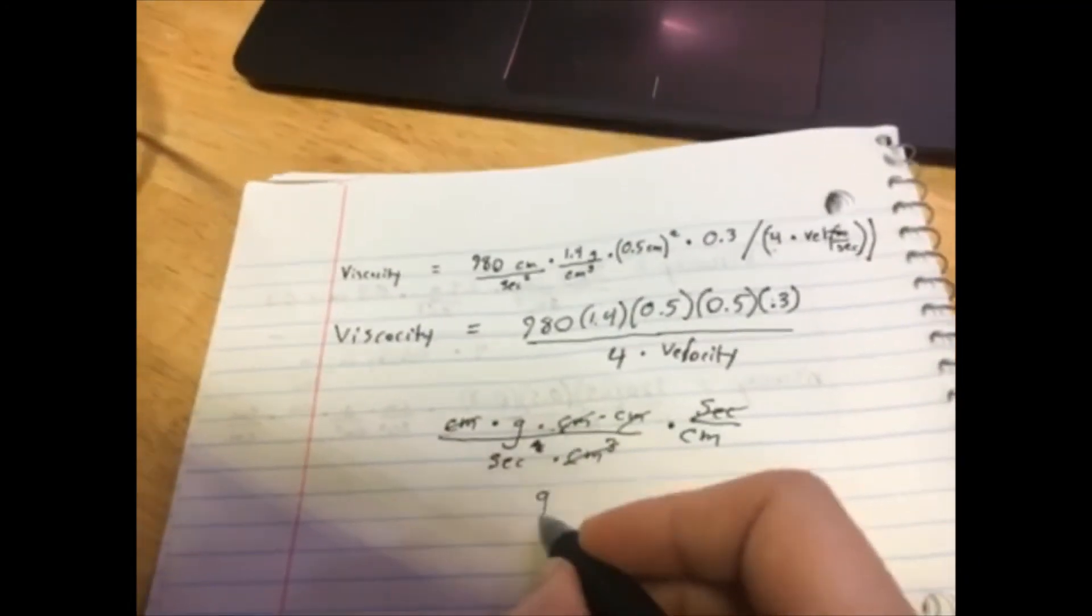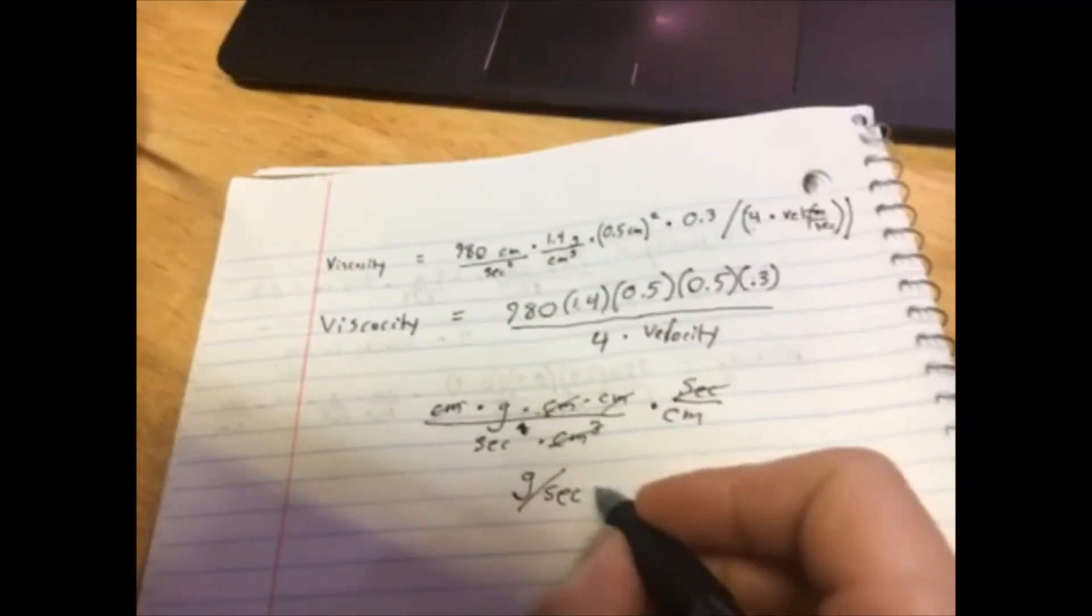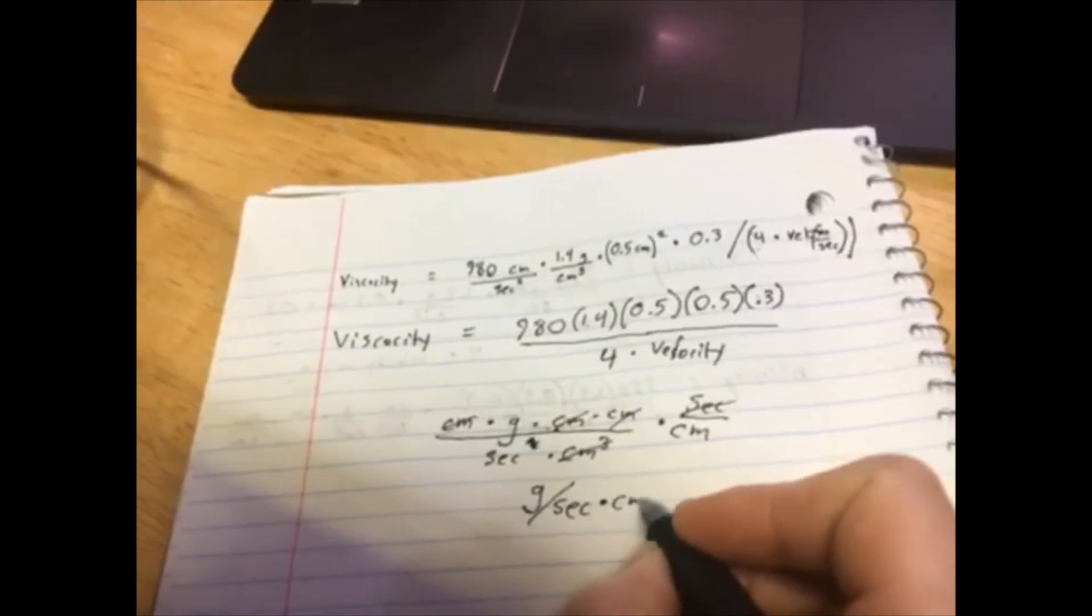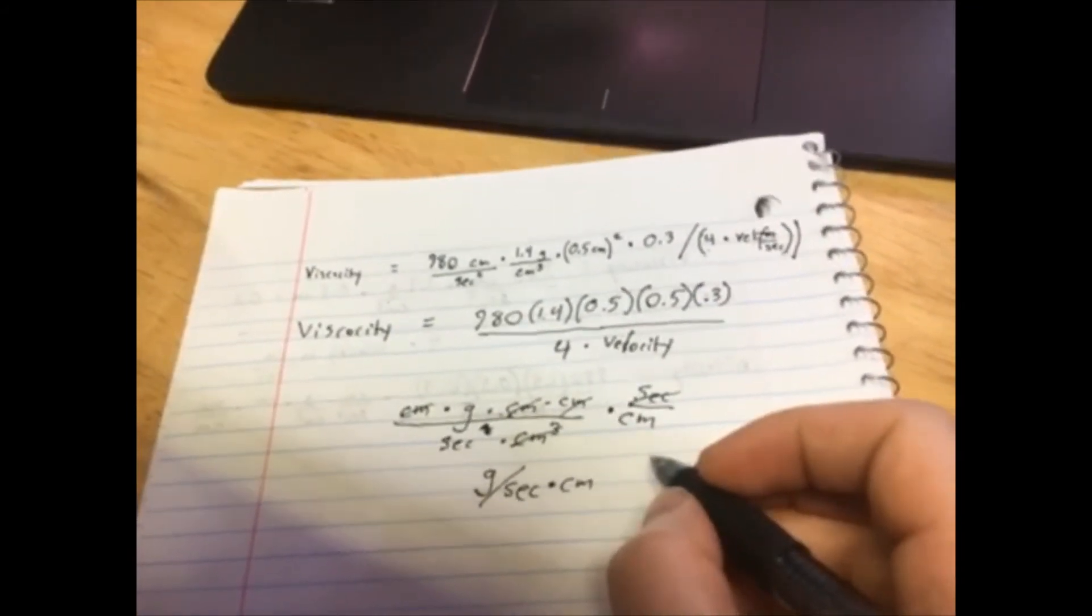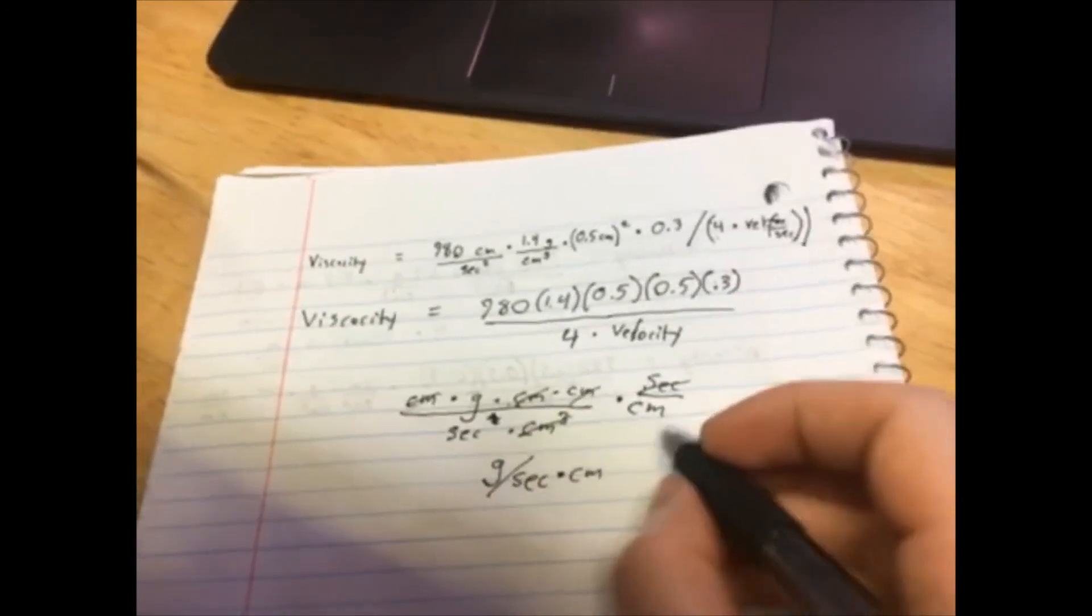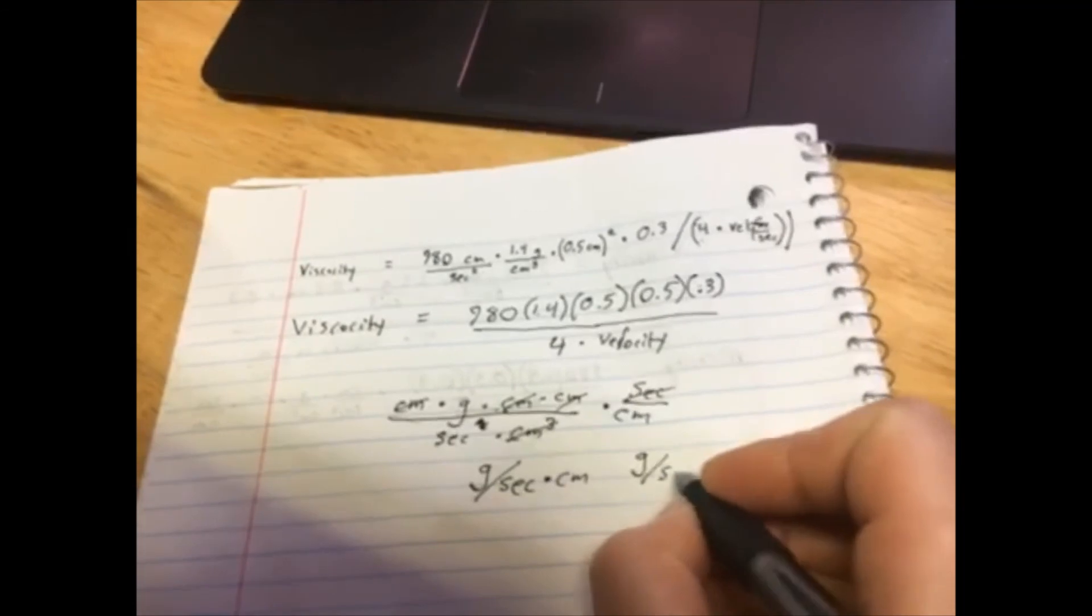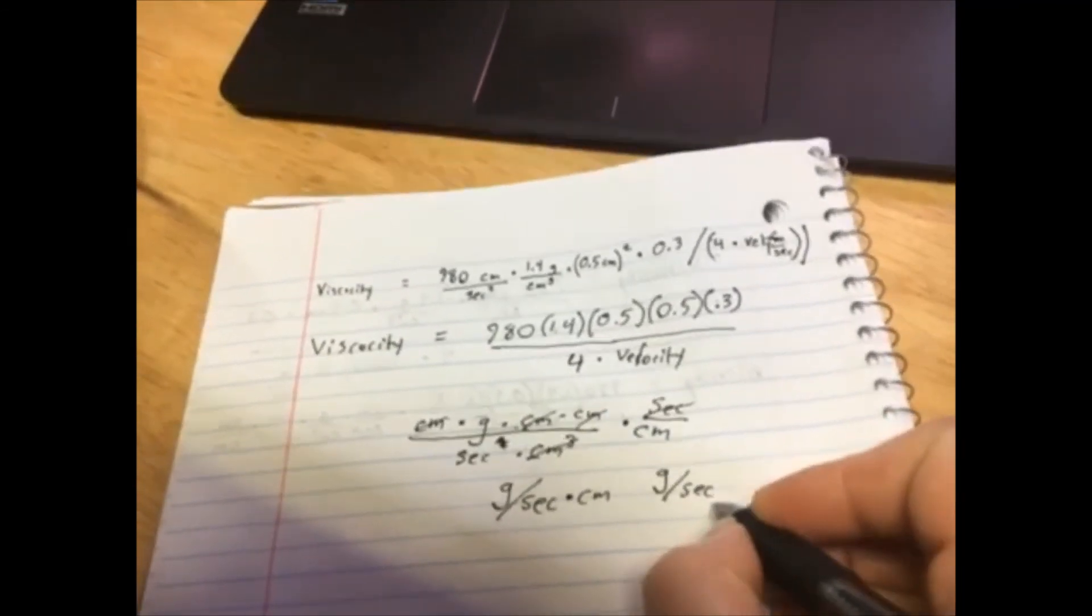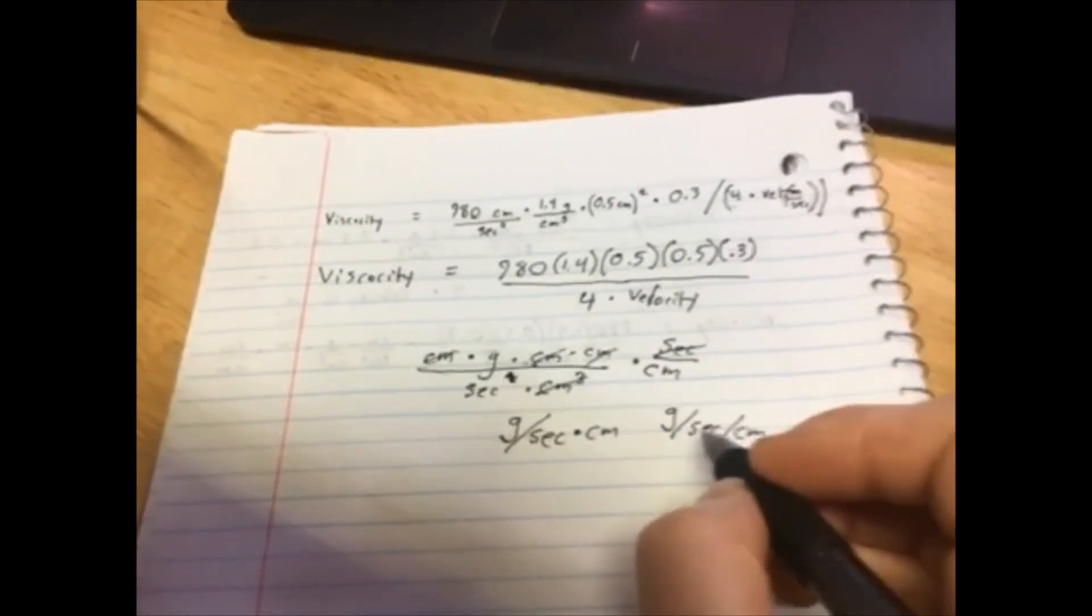grams per second times centimeters, which is the same as grams per second per centimeter, and this unit is called poise.